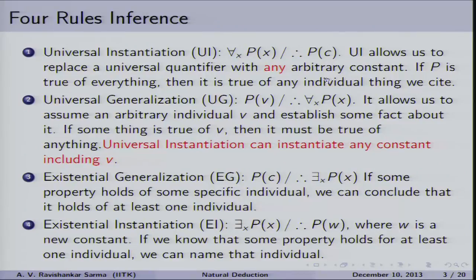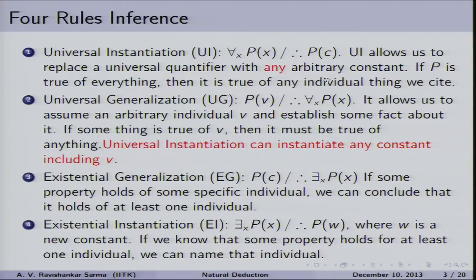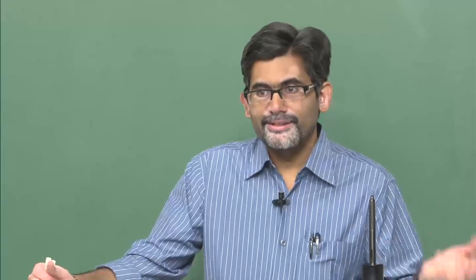For any arbitrary constant, p(c) has to be true — you can take p(d), p(c), p(f) — for all kinds of arbitrary variables, 'for all x, px' is going to be true. If P is true of everything, then it is true of any individual we cite. For example, if all crows are black and you find a specific crow, that crow also has to be black — that is one instance of the universal proposition. The second rule is Universal Generalization, which is a little tricky. If you have a formula p(v), you can generalize it and say 'for all x, px'. This allows us to assume an arbitrary individual v and establish some fact about it.